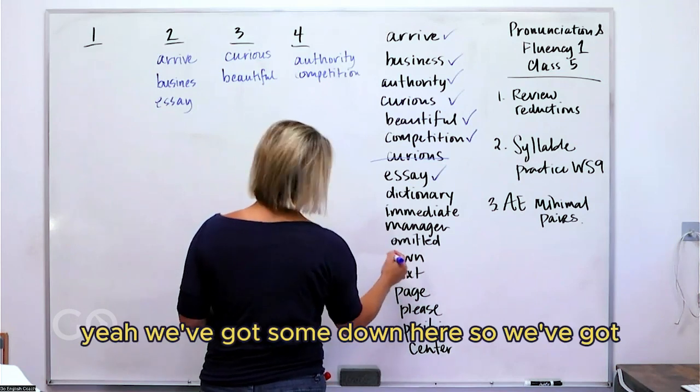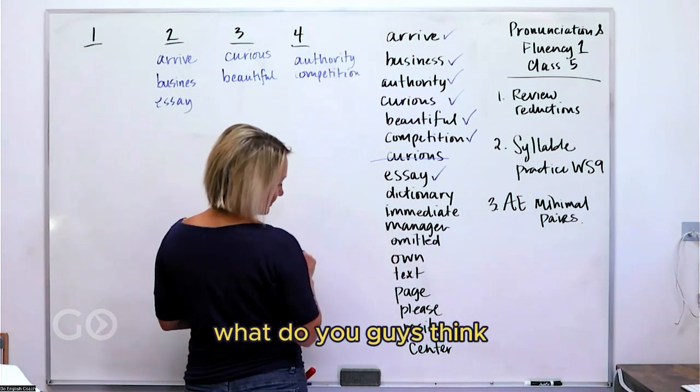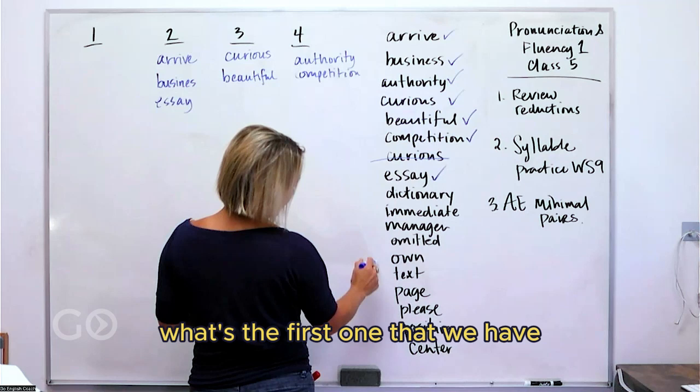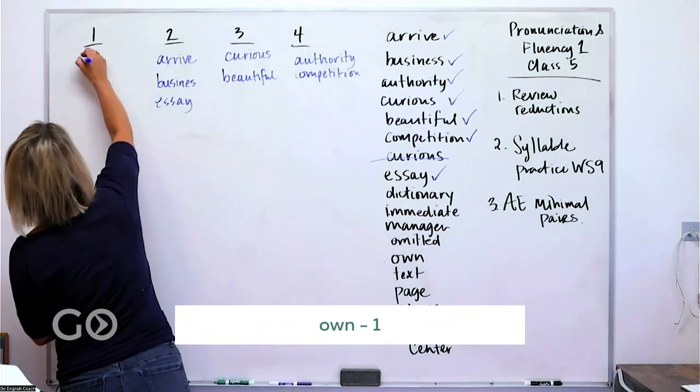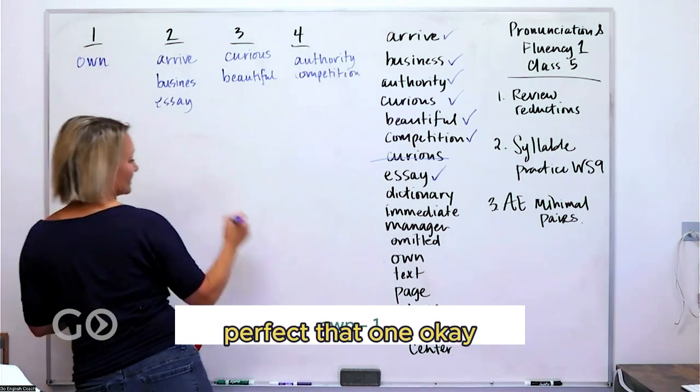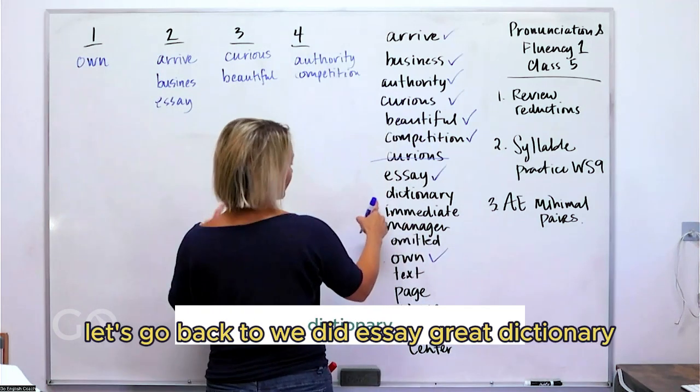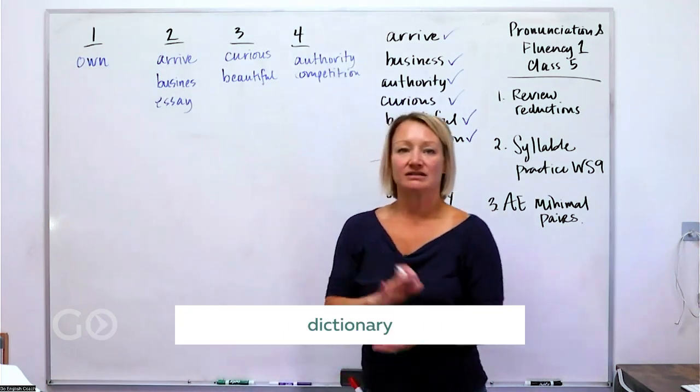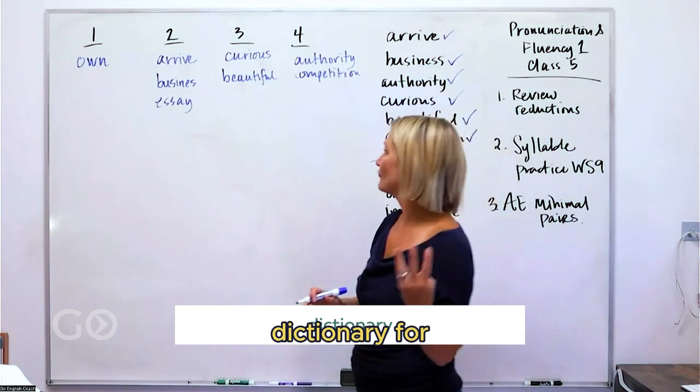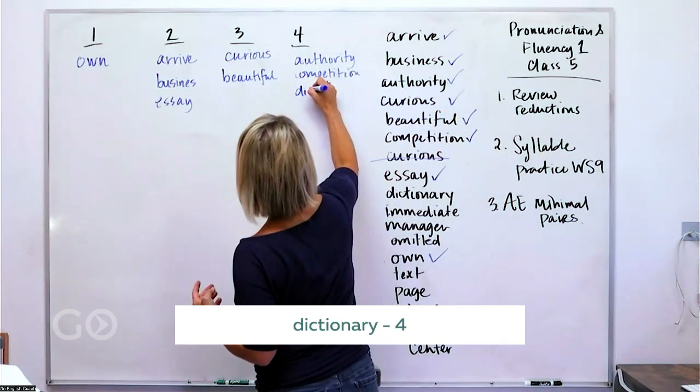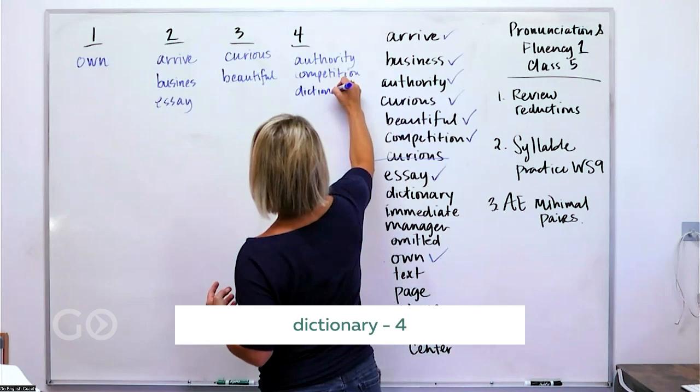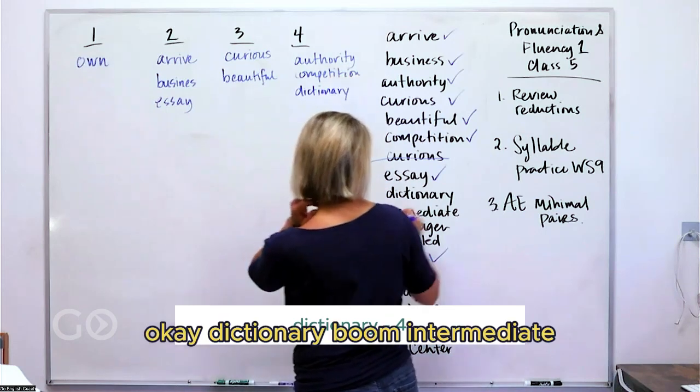Do you see any of this list that have just one? Yeah, we've got some down here. What do you guys think? What's the first one that we have? Yeah, own. Perfect. Let's go back to, we did essay. Great. Dictionary. Dictionary. Four.